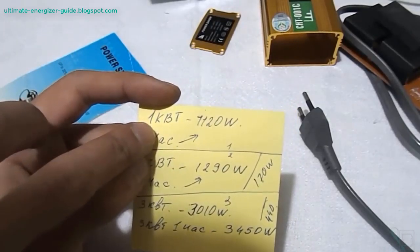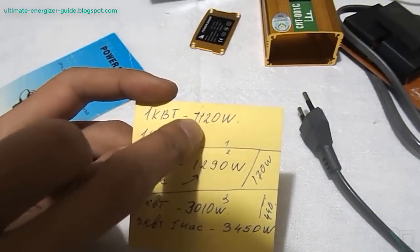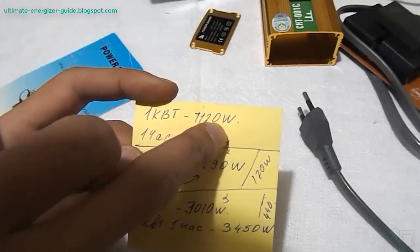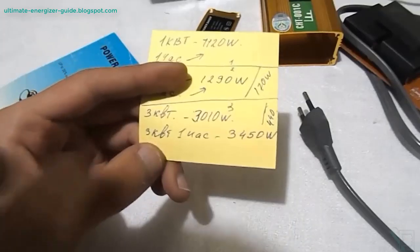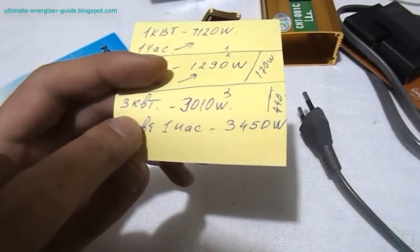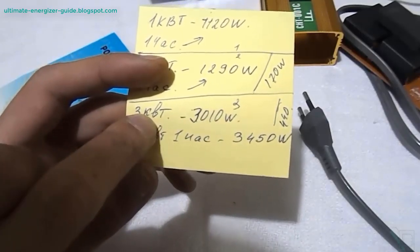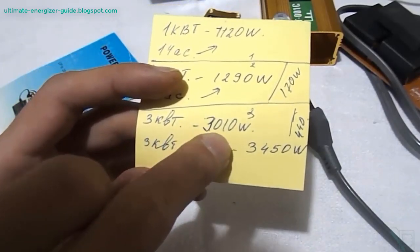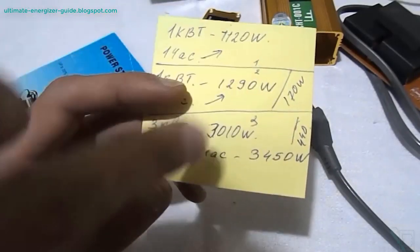So does the electricity saving box really work? The answer is complex. While most of the commercially available devices may offer only marginal savings, there is evidence to suggest that more advanced versions grounded in over unity principles could provide significant benefits. The key is separating the wheat from the chaff—identifying genuine technology amid a market flooded with fakes. The Ultimate Energizer Guide offers valuable insights in this regard, shedding light on how electricity saving boxes could indeed work when based on the right principles.